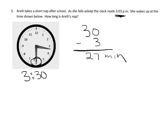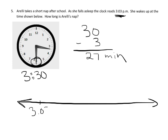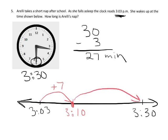Another way is we could have used a number line. We could have said, well, okay, here's 3:03, and then here's 3:30. Let's figure out how many minutes elapsed between those two times. So we can add seven minutes—that bumps us up to 3:10. And then from 3:10 to 3:30 is another 20 minutes. So there we can see that 27 minutes has elapsed. Two different ways to solve that same problem.